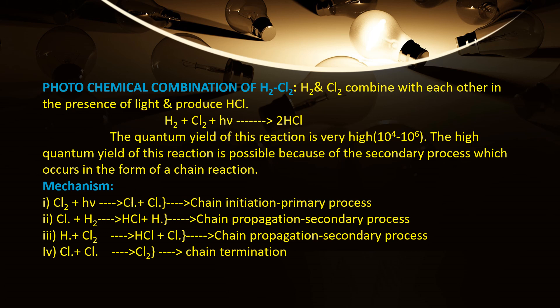In this video, we will be learning this in detail. When H₂ and Cl₂ react in the presence of light, they produce two molecules of HCl: H₂ + Cl₂ → 2HCl (in the presence of hν). The quantum yield of this reaction is very high — 10⁶. This high quantum yield is because the secondary process takes place in the form of a chain reaction.